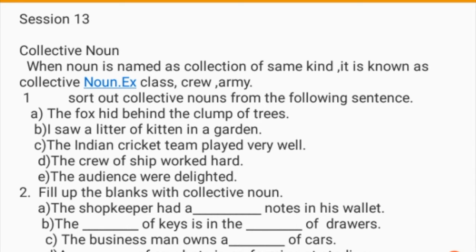This is session 13, and we are doing nouns. We have now reached collective nouns. When a noun is named as a collection of the same kind, it is known as a collective noun. For example: class, crew, army. It is a collection — a group of children is a class, a group of soldiers is an army.